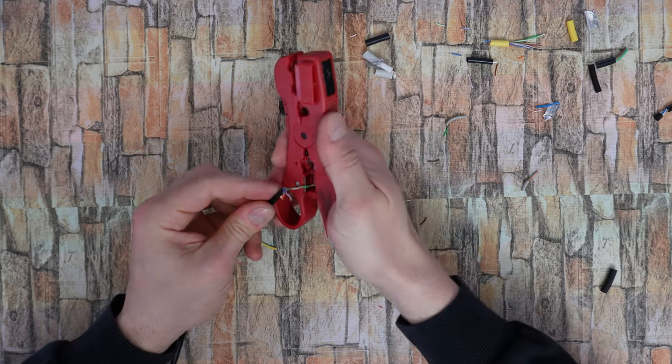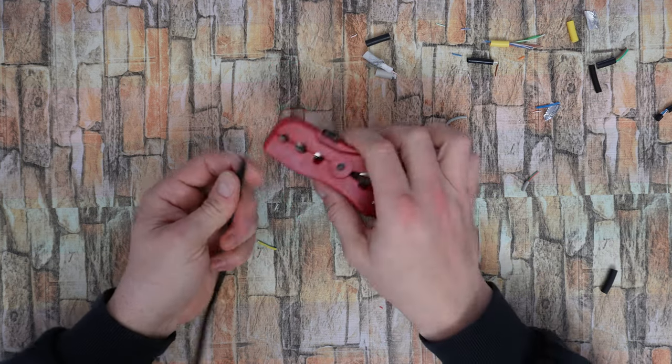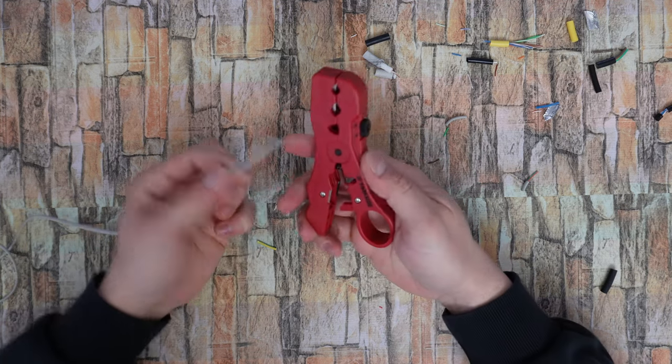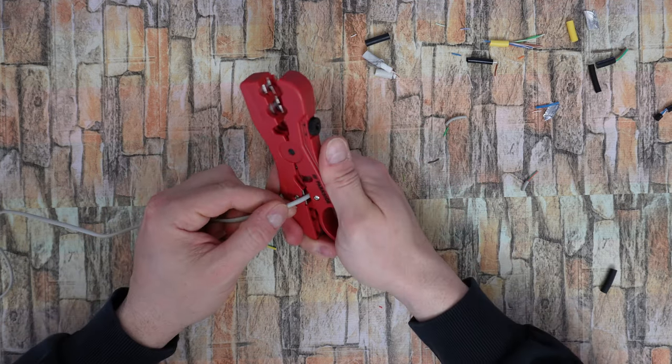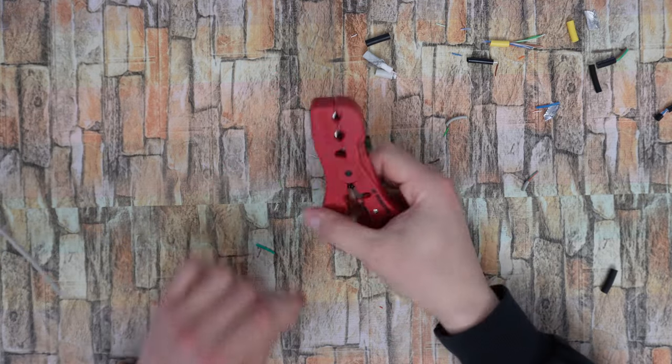Or you can use the cutter and cut these small cables, or from a telephone line, again smaller cable, remove the insulation. Clean cut, I like it.